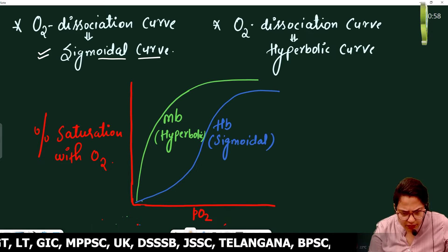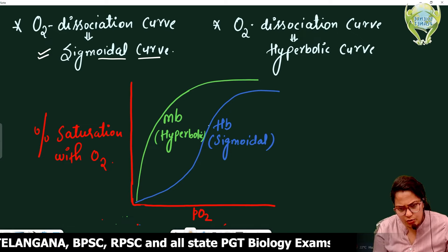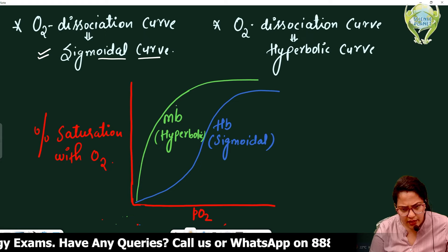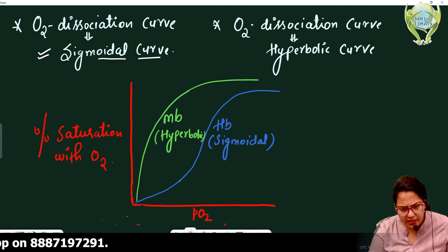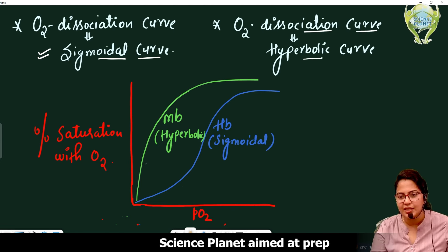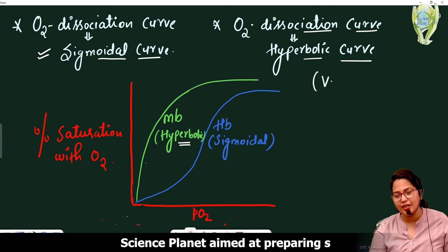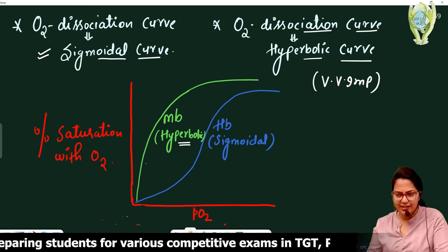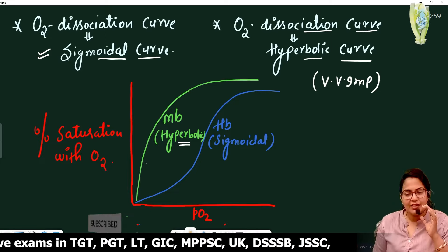Hemoglobin का curve sigmoidal है क्योंकि oxygen से lower affinity है और यह आसानी से oxygen release कर देता है। जबकि myoglobin की oxygen से affinity higher है। Myoglobin का oxygen dissociation curve hyperbolic आता है। यह sigmoidal और hyperbolic बहुत important है — hemoglobin का oxygen dissociation curve sigmoidal है, और myoglobin का hyperbolic है। This is very very important.